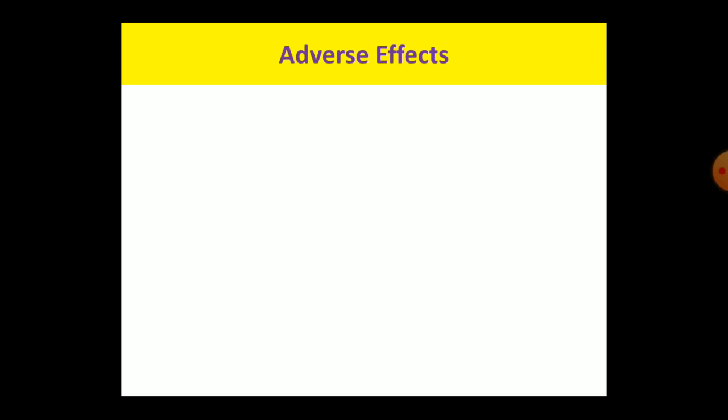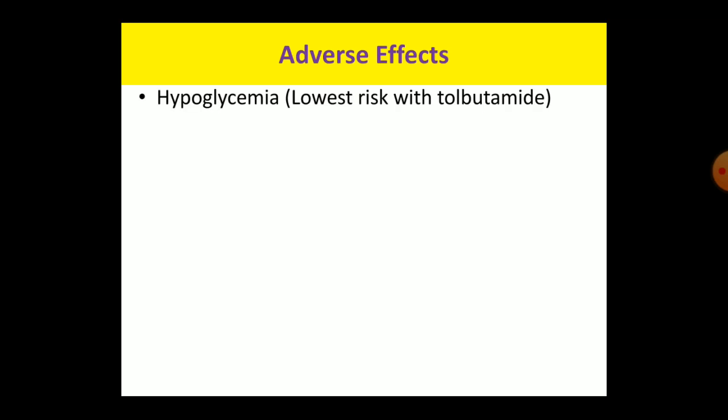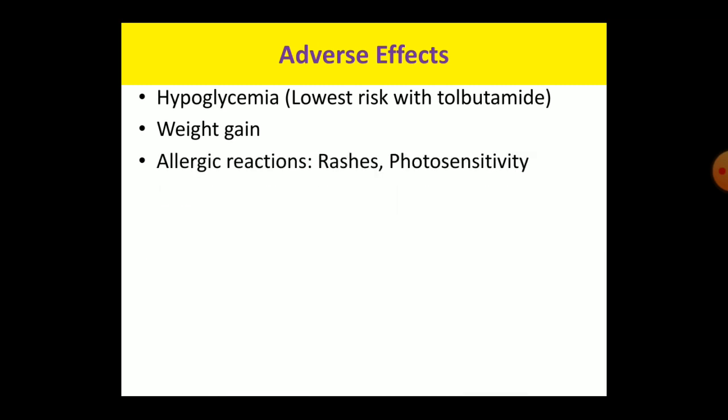Regarding adverse effects: the primary adverse effect of sulfonylureas is hypoglycemia, and this is lowest with tolbutamide because its efficacy is less and it has a shorter duration of action. Second, since insulin is an anabolic hormone and sulfonylurea stimulates pancreatic beta cells to release insulin, weight gain of around 1–4 kg occurs with sulfonylureas. As the name suggests, sulfonylurea is a sulfa drug, so allergic reactions such as rashes and photosensitivity are common. Sometimes serious allergic reactions like angioedema or agranulocytosis can occur.